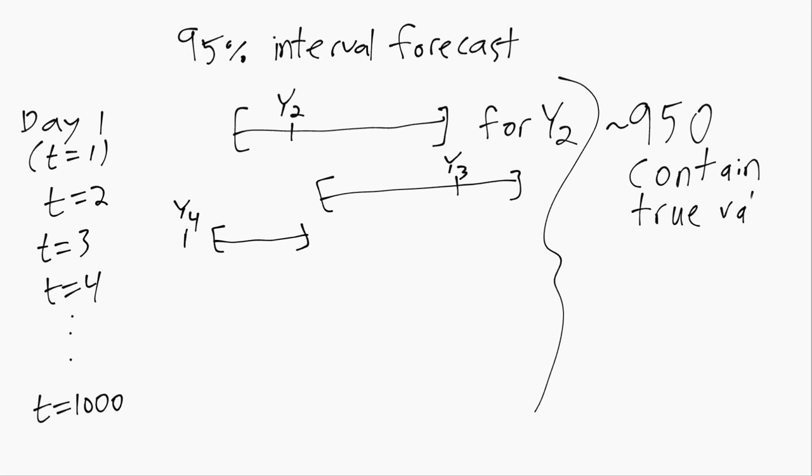Which also means around 50 do not. So it's okay that some of them miss as long as it's the small percentage that you specified in the nominal level. Like 95% means you can miss 5% of the time. So that's the idea behind interval forecasts.